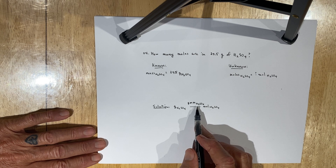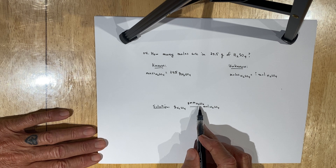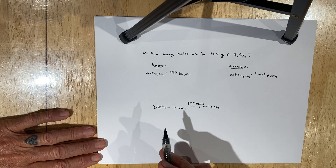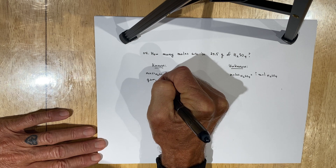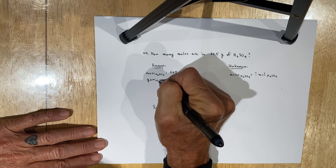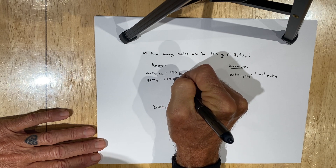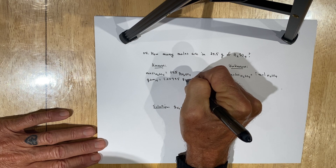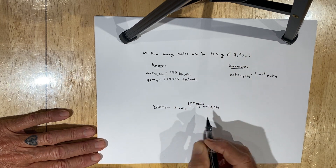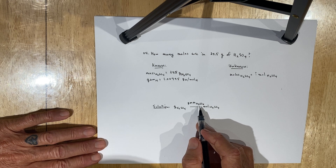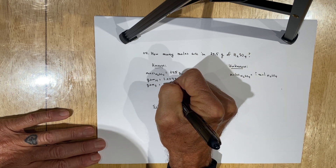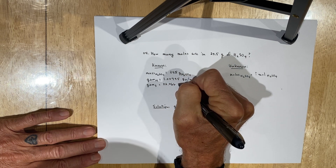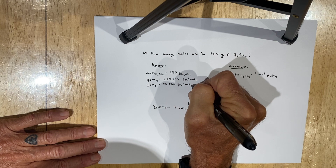To do that, you need to know the mass of two moles of hydrogen atoms, the mass of one mole of sulfur atoms, and the mass of four moles of oxygen. You'll need to turn to your periodic table to look up those individual gram atomic masses. The gram atomic mass of hydrogen is 1.00795 grams of hydrogen per mole of hydrogen. The gram atomic mass of sulfur is 32.066 grams of sulfur per mole of sulfur.